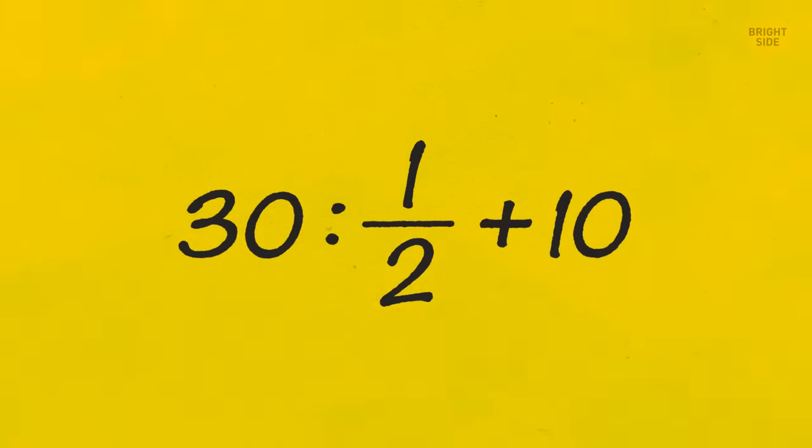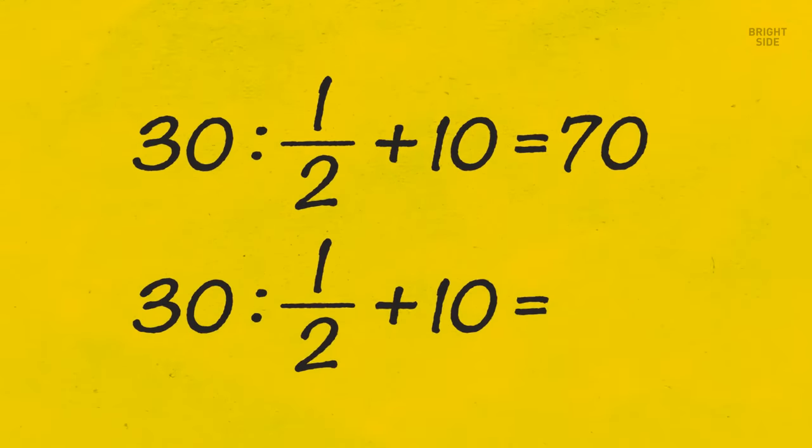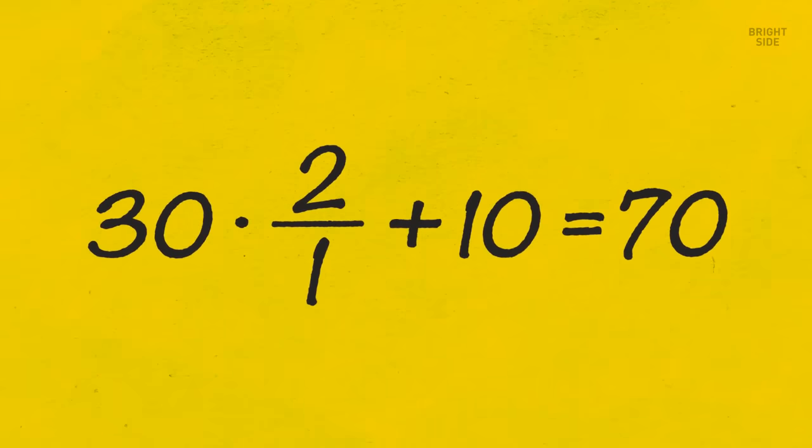Divide 30 by one half and add 10. What will be the result? It's 70. Most people count like this. 30 halves plus 10 equals 25. But when you divide some number by a fraction, you actually have to multiply it by the inverted fraction, so 30 by 2 plus 10 equals 70.